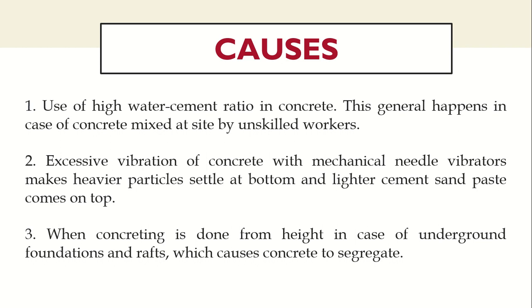Good concrete is one in which all the constituents are properly combined and form a homogeneous mixture. The primary cause of segregation in concrete is the difference in specific gravity of the constituents. The specific gravity of cement is between 3.1 to 3.5, for aggregates it is around 2.6 to 2.7, and the specific gravity of water is one — so there is a significant difference among the three raw materials.